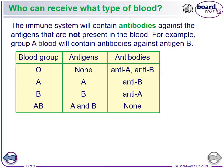Blood group AB can take any blood type because it doesn't fight any of them. Blood type B has anti-A antibodies, so it only takes antigen B blood. Anti-B means it has antibodies against B blood, so it can't take B blood. Blood group O has no antigens, but it has both anti-A and anti-B antibodies, making it the universal donor — it can be given to anyone, but the person with O blood can only receive O blood.